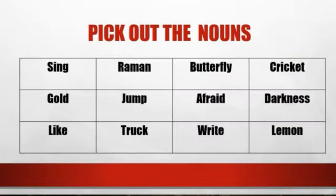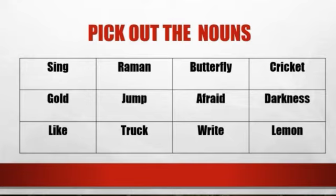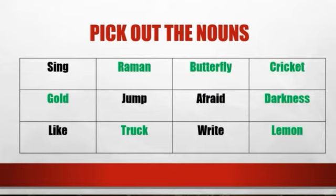Let's do an activity. From the given words, pick out the nouns: sing, Ramen, butterfly, cricket, gold, jump, afraid, darkness, like, truck, right, lemon. Always remember the definition: a noun is the name of a person, place, animal, or thing. The nouns are: Ramen, butterfly, cricket, gold, darkness, truck, lemon. The other words — sing, jump, afraid, like, right — are action words or describing words.